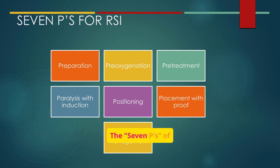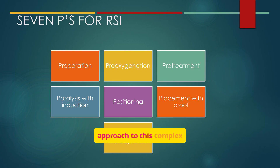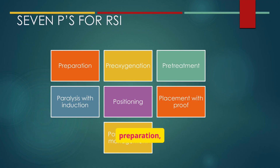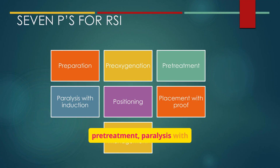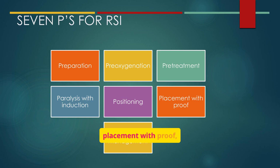The seven Ps of RSI provide a structured approach to this complex procedure. These include preparation, pre-oxygenation, pre-treatment, paralysis with induction, positioning, placement with proof, and post-intubation management.